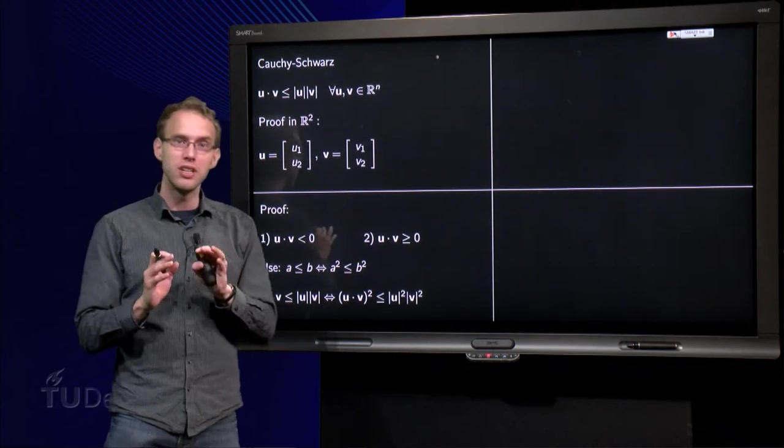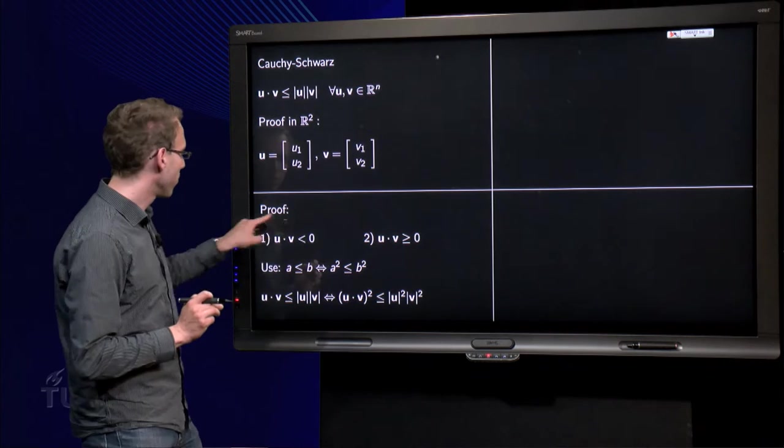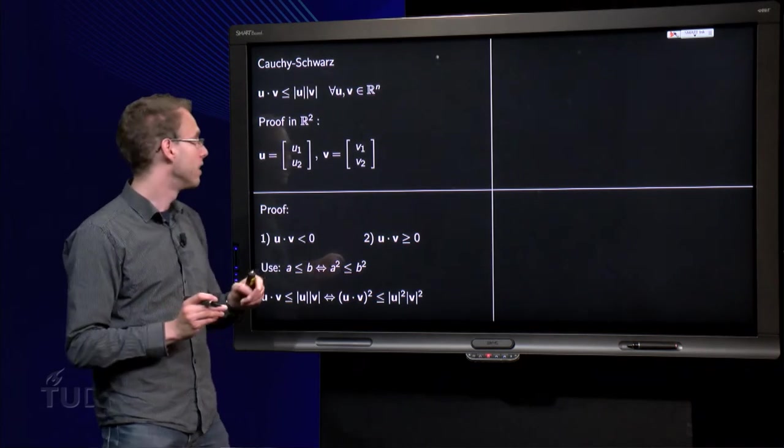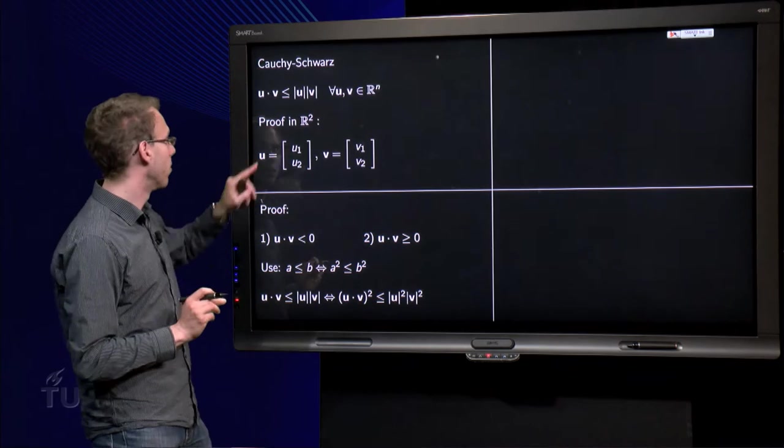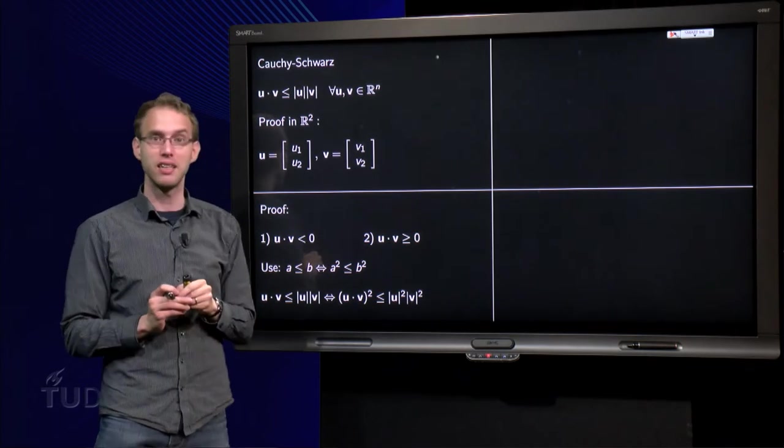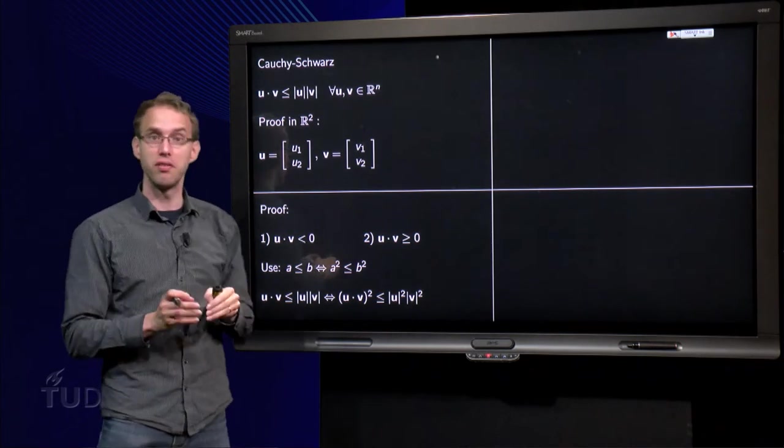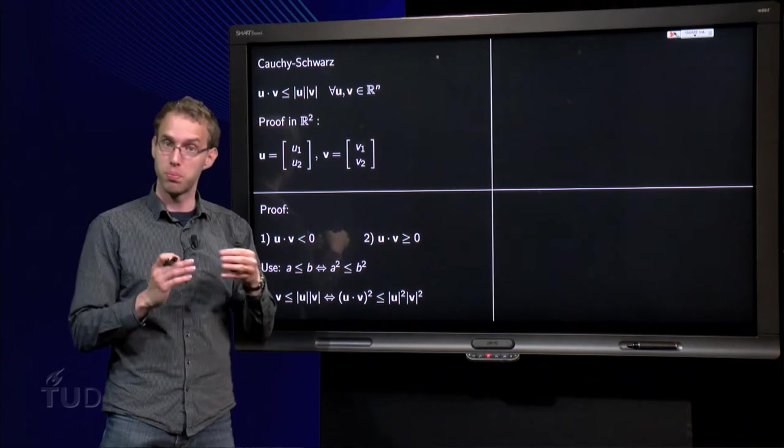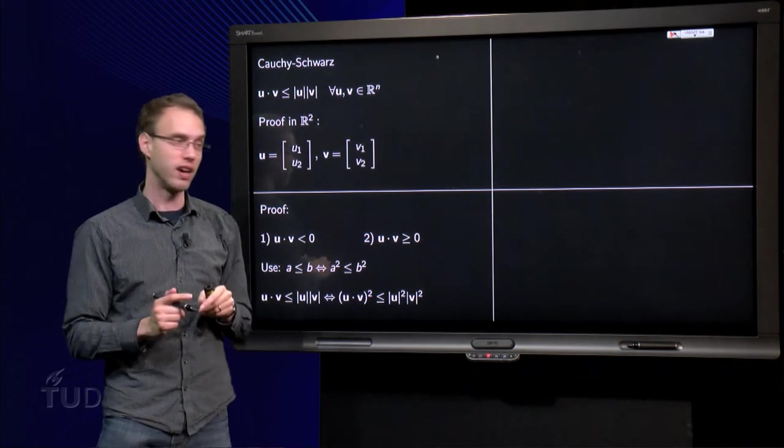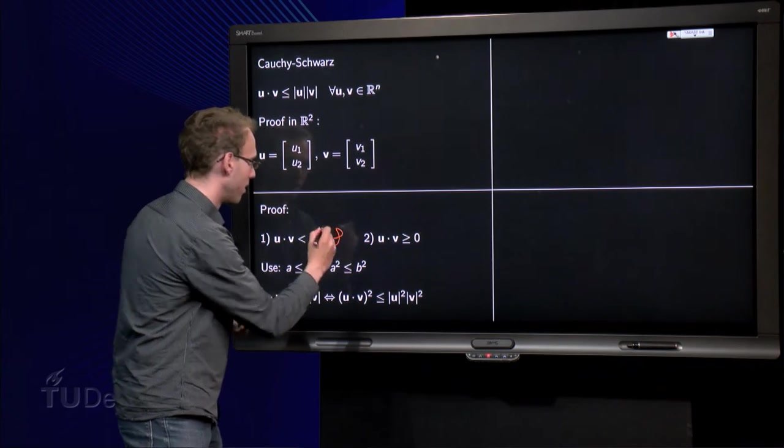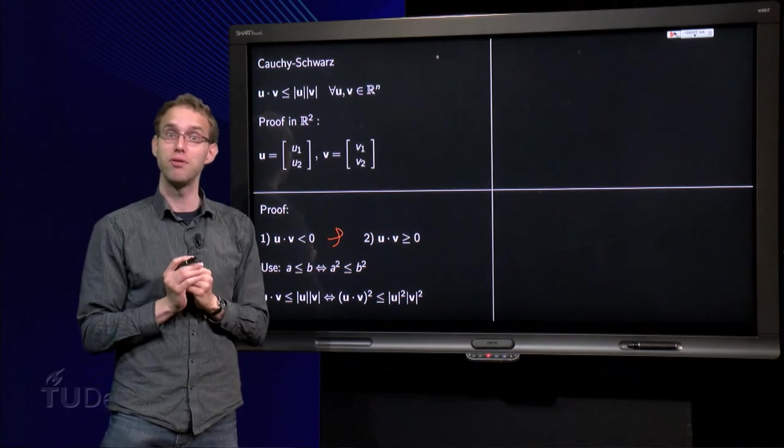So, what are we going to do? Well, we use a trick. First of all, we say if this inner product u·v is smaller than 0, well then we have something negative here. On the right hand side you have the product of lengths, which is always positive, so then the inequality is satisfied. So, okay, done. So, that part of the proof went fast.